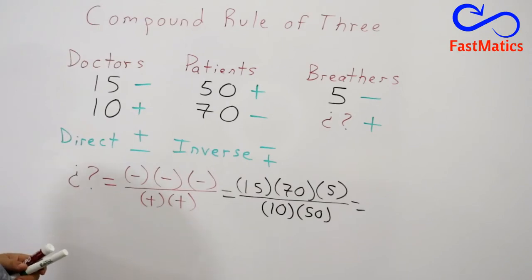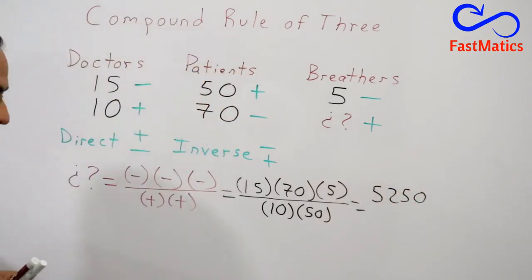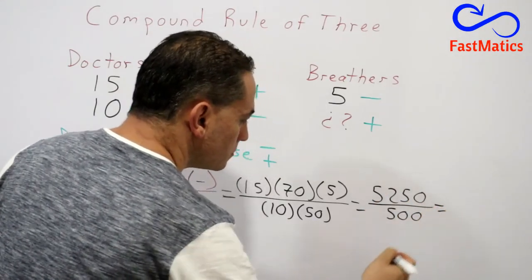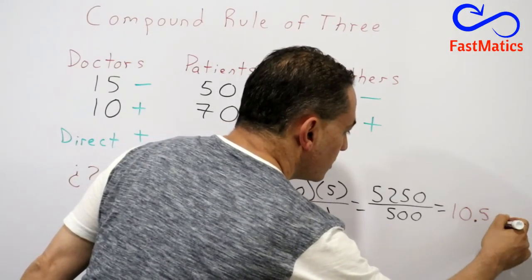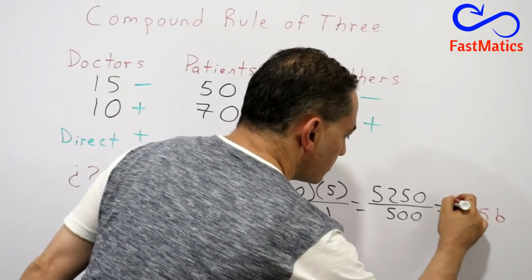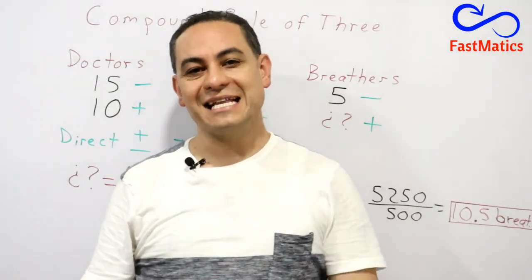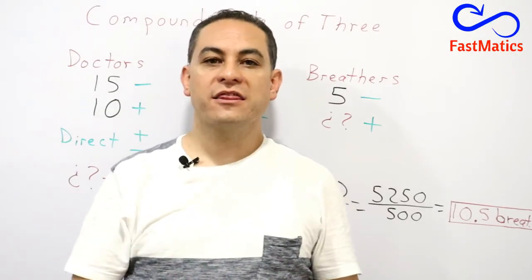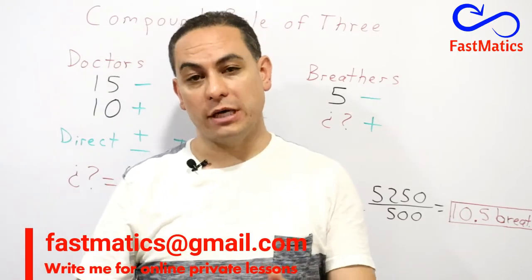Then, if we multiply, we are going to have 5,250 divided by 500. So we can see that it's logical that if we have less doctors, we're going to need more than twice the breathers for patients: automatic breathers.